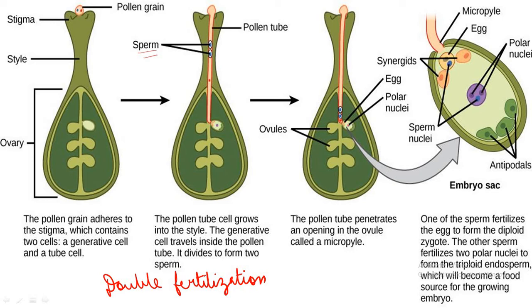Through the micropyle, the pollen tube enters inside the ovule where the embryo sac is present. This is the enlarged diagram of the embryo sac where the pollen tube enters. The tip of the pollen tube breaks and the two male gametes are released. One male gamete fuses with the egg to form the diploid zygote. When there is fusion of the male and female gametes — sperm and egg — it results in the formation of a diploid structure called zygote. The other sperm fertilizes the two polar nuclei to form the triploid endosperm, which will become a food source for the growing embryo.